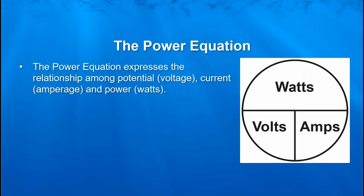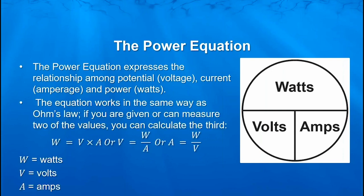The power equation is a much more useful equation on a daily basis for things you need to figure out in your electrical work. The power equation expresses the relationship among potential — volts — current and amperage. And this time, instead of resistance, we're putting a power factor, which is measured in watts. The equation works exactly the same way as Ohm's Law. If you're given any two, you can find out the third. To find out the power in watts, multiply volts times amps. If you want to know the voltage, divide watts by amps. If you want to know amperage, divide the watts by volts.